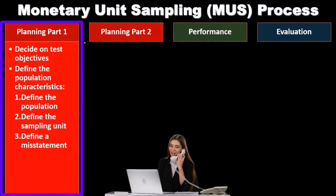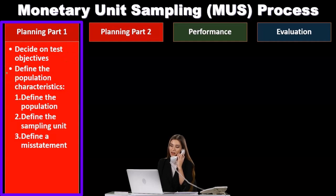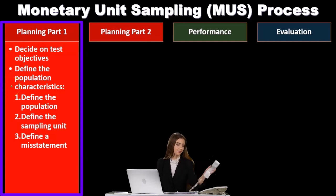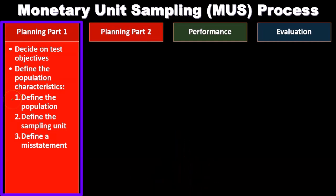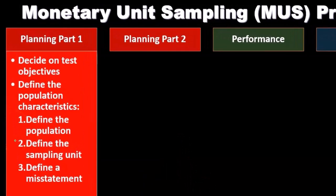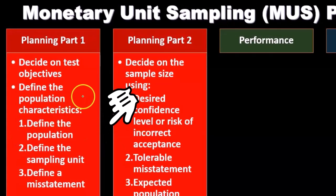Planning part one: decide on test objectives. Then define the population characteristics, including define the population, define the sampling unit, and define a misstatement.